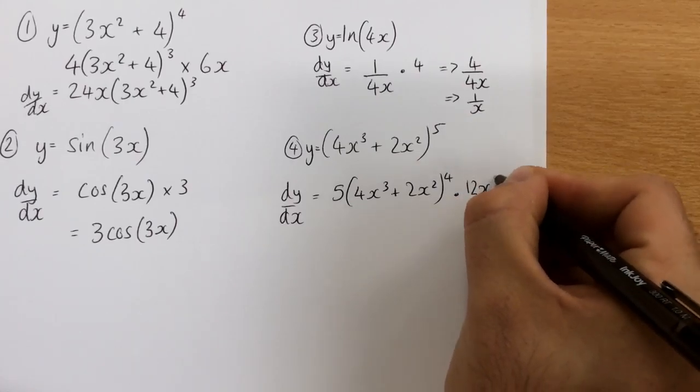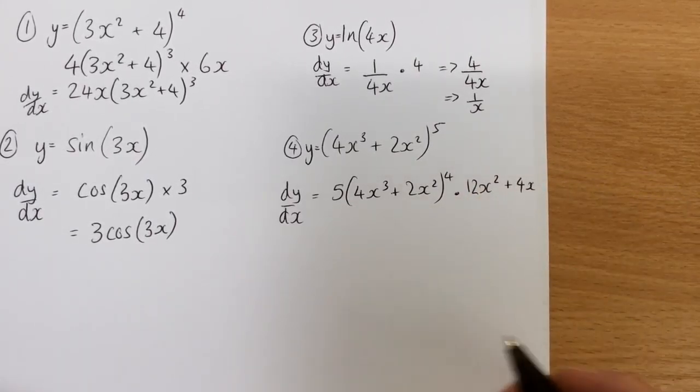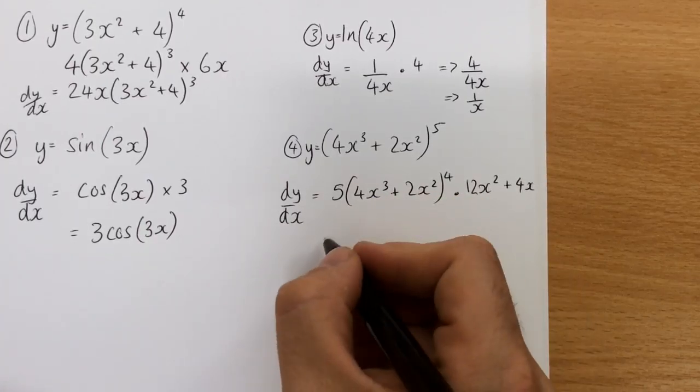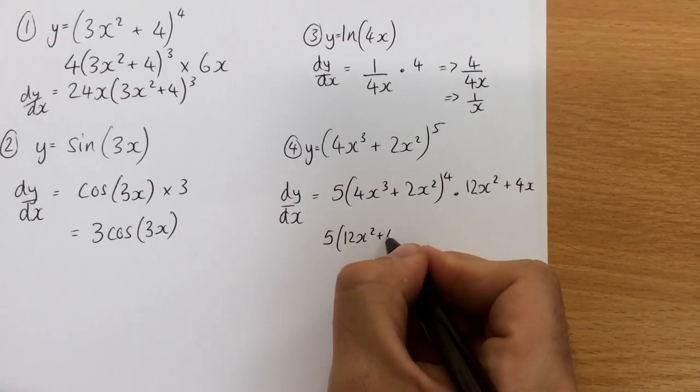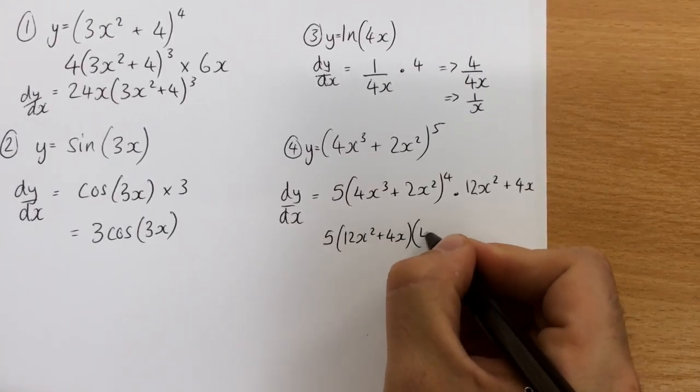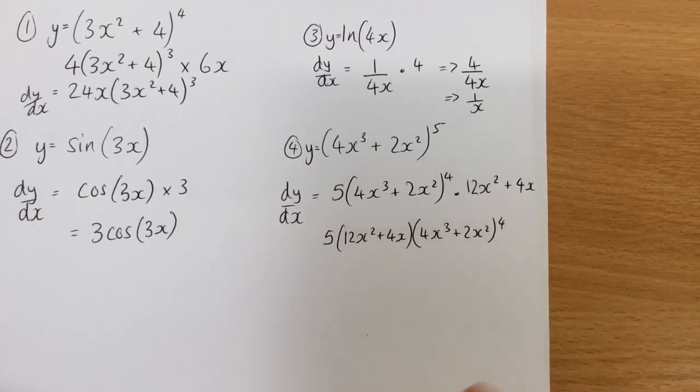12x to the power of 2 and 4x. 12x squared plus 4x, so then again, I'm just going to simply write this as 5 times by 12x squared plus 4x, times by 4x cubed plus 2x squared, all to the power of 4.